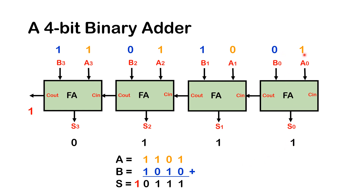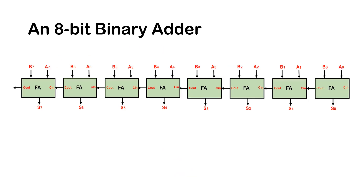Adding through the bits: 1 add 0 is 1, the sum is 1. 0 add 1, sum is 1. 1 add 1, sum is 0 with carry-out 1. I summarize all the operations in this table. Going through the addition: 1+0=1, 0+1=1, 1+0=1, 1+1=0 with carry 1. That's the operation of a 4-bit binary adder. You can make an 8-bit binary adder by cascading 4 additional full adders.